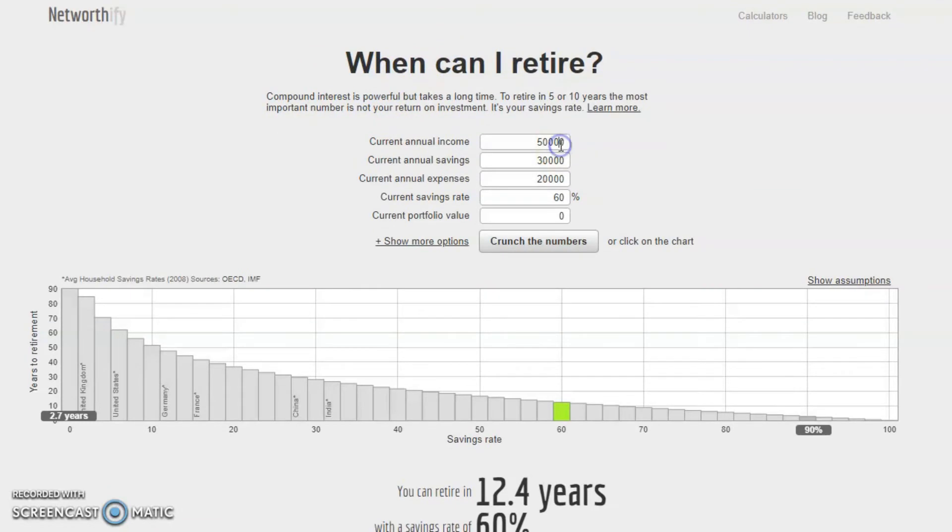Here's an example. A hypothetical American couple makes a total household income of $104,000 per year. However, the number needed in the first field is household income after taxes.